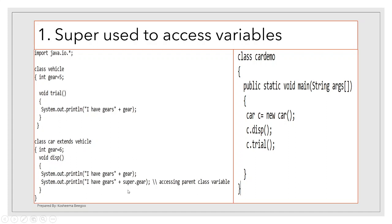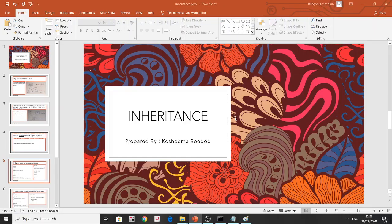When we use 'super.gear' inside the subclass method, it goes into the superclass Vehicle and retrieves the value assigned there, which is 5. Without 'super', it displays the subclass value of 6. When 'c.trial()' is called and the method isn't found in the subclass, it goes up to the superclass and runs it there, displaying the value 5.